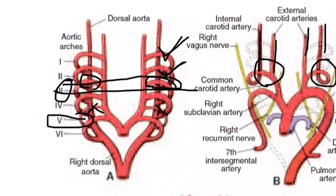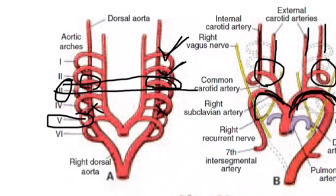Moving on to the fourth aortic arch: on the right side it forms the right subclavian artery, and on the left side it forms the aortic arch. So from the fourth aortic arch, the left side gives the aortic arch and the right side gives the right subclavian artery. The fifth arch is degenerated.